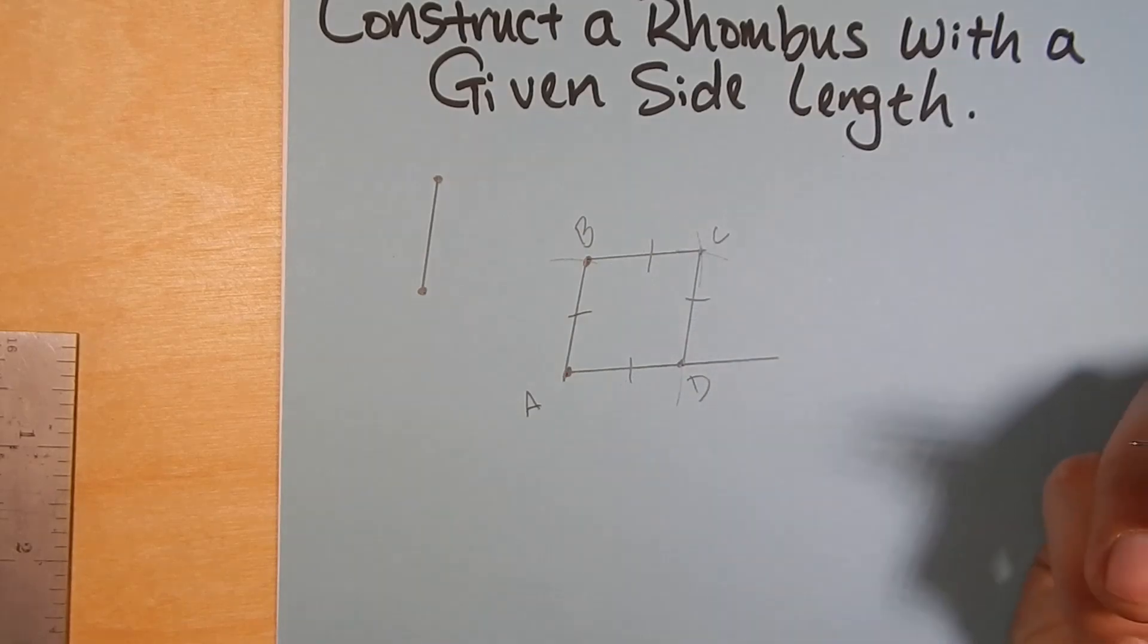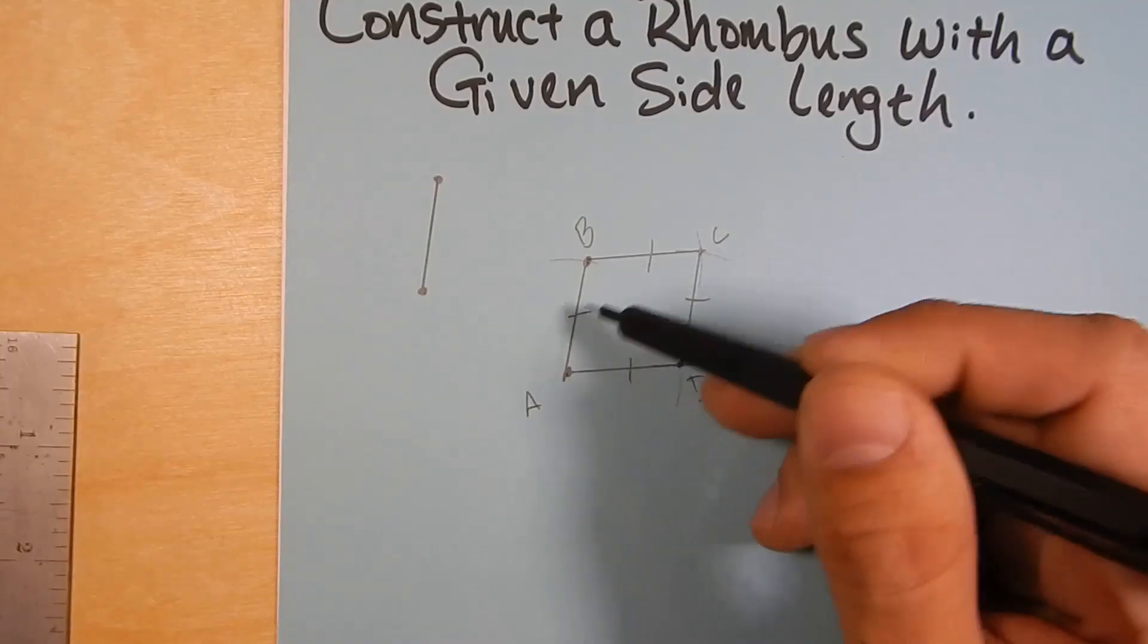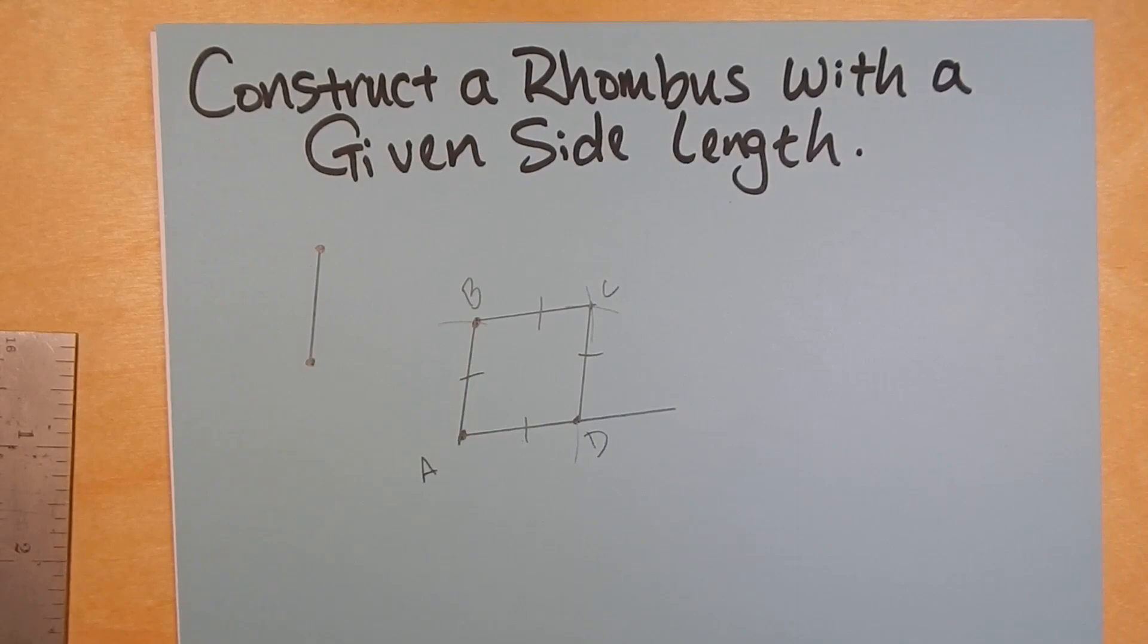And if we have a parallelogram that has four congruent sides, we know that that is a rhombus. So this is the way to construct a rhombus with a given side length.